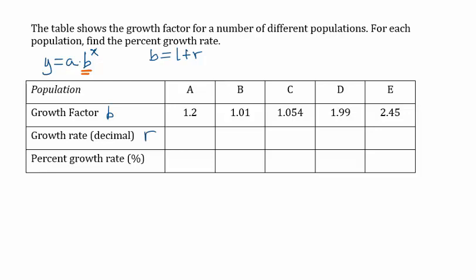One way to do this is to isolate r in this formula. If we subtract 1 from each side, we get b minus 1 is equal to r.